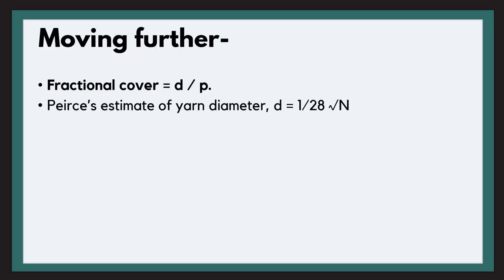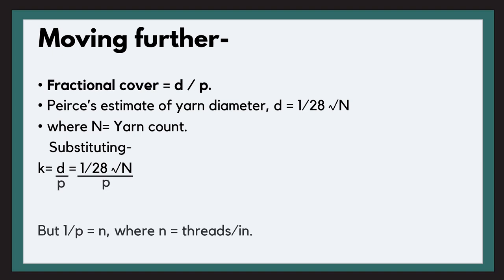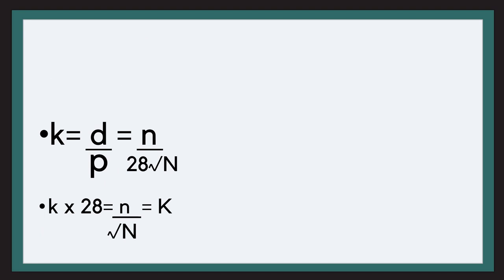Now there is a twist. According to Peirce's estimate of yarn diameter, D equals 1 upon 28 into under root yarn count that is capital N. So now we will substitute this diameter in the formula of our fractional cover that is D upon P. So it will become 1 upon 28 into under root N upon P. Now we know that 1 upon P is also equal to N, where N is threads per inches.